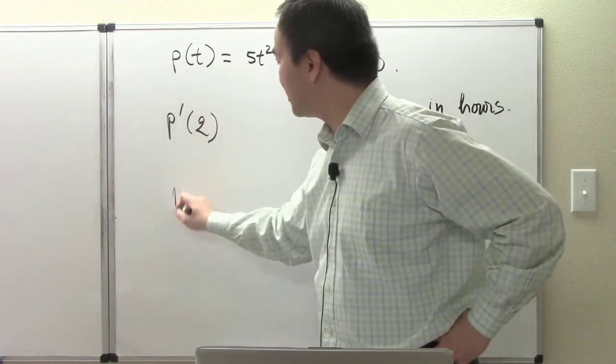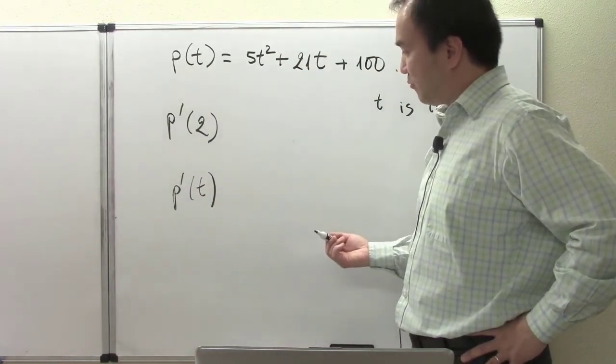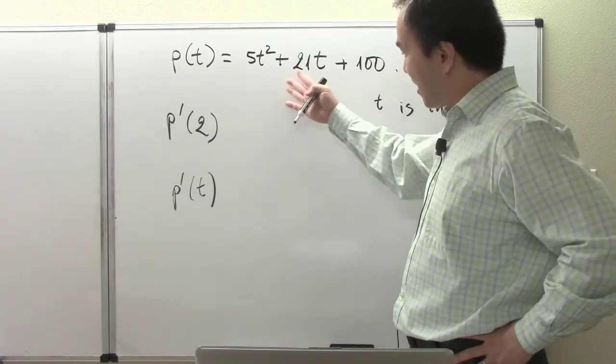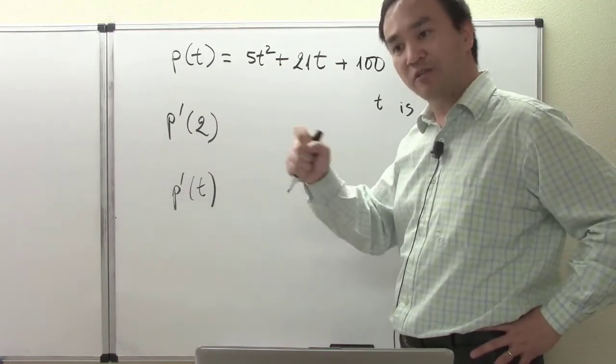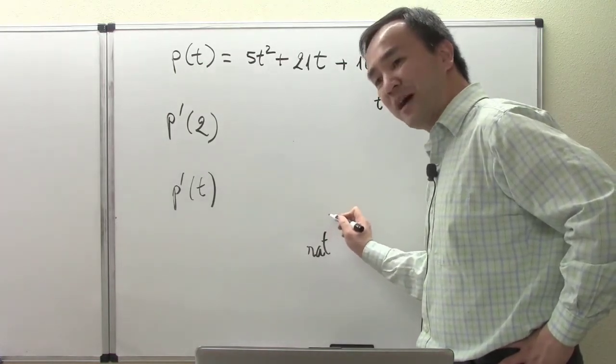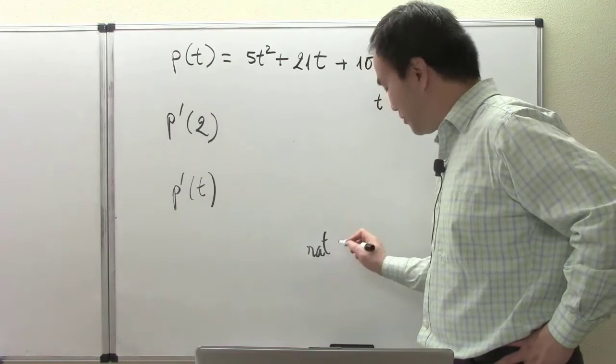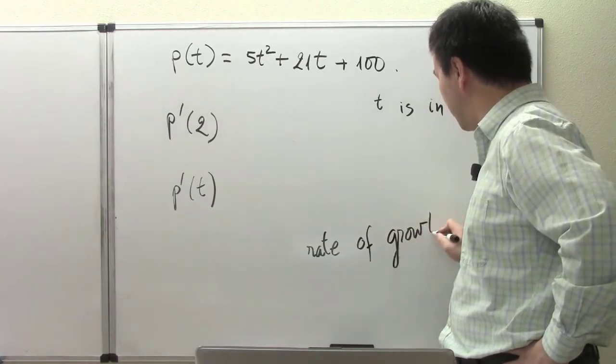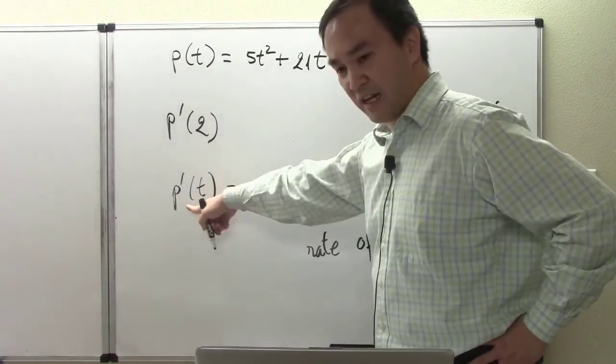p'(2) - we have to look for the derivative of p. When the problem is about a speeding problem, we call that rate of change of velocity. But for a problem like this, we simply call it the rate of change of population growth. Among the scientists, the microbiologists and biologists, they don't do much with velocity, but they work with the growth rate or rate of growth.